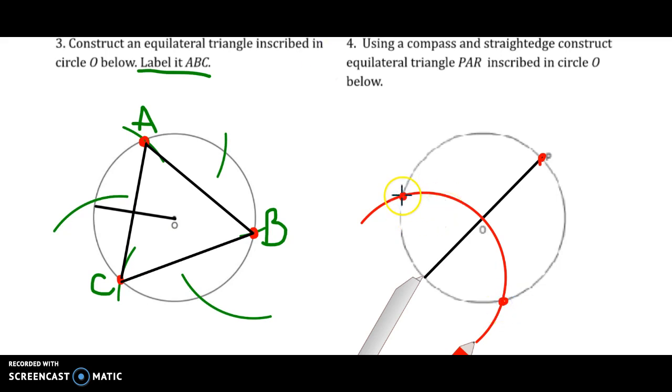And don't forget, just because I have the points on there does not mean I'm done. I need to connect them to form the triangle. And lastly we need to label. So we have P, I'm going to label this A and this R. If you labeled the point on the right A and the other point R that would be fine as well. And that is the conclusion to constructing equilateral triangles inscribed in a circle.